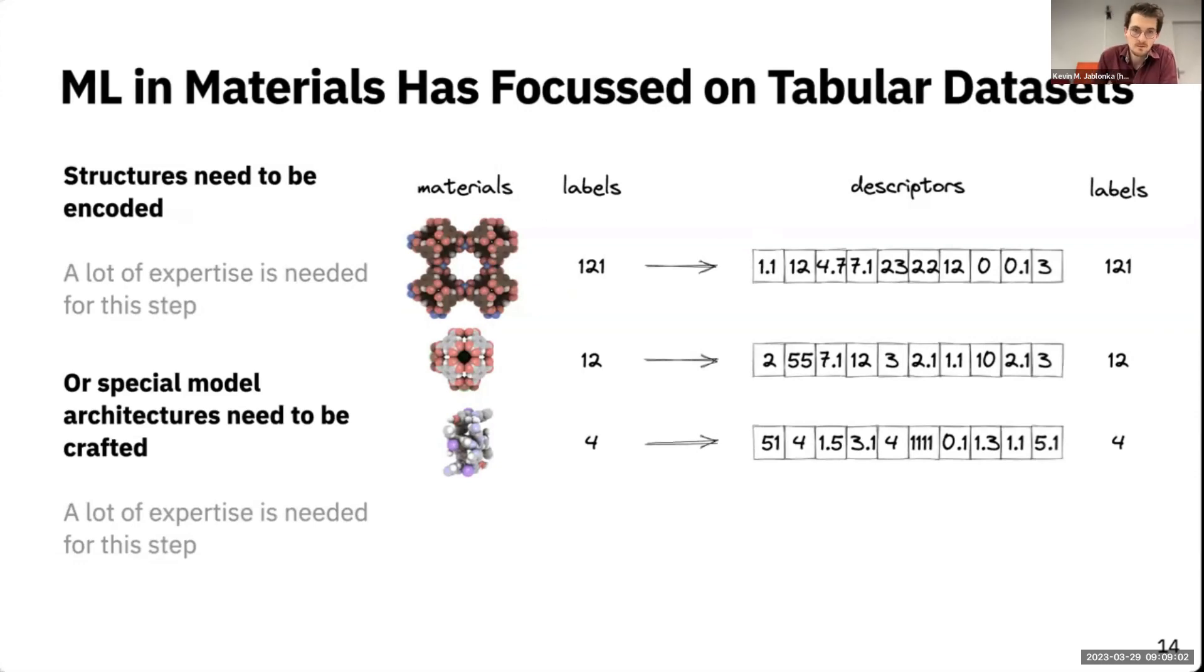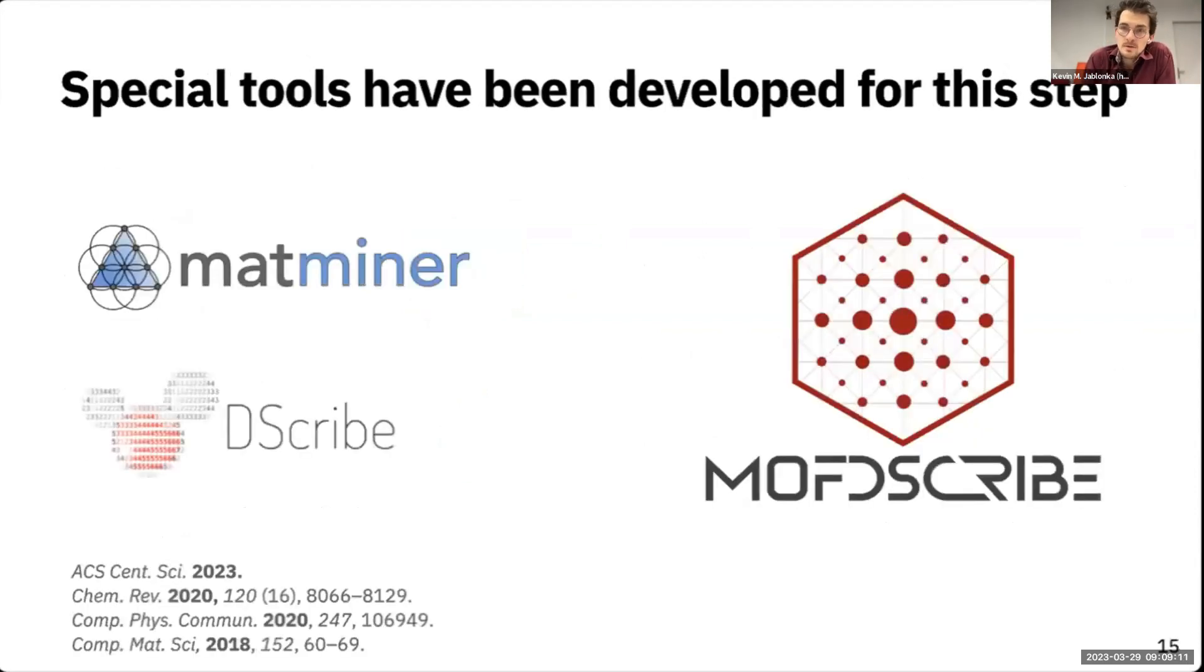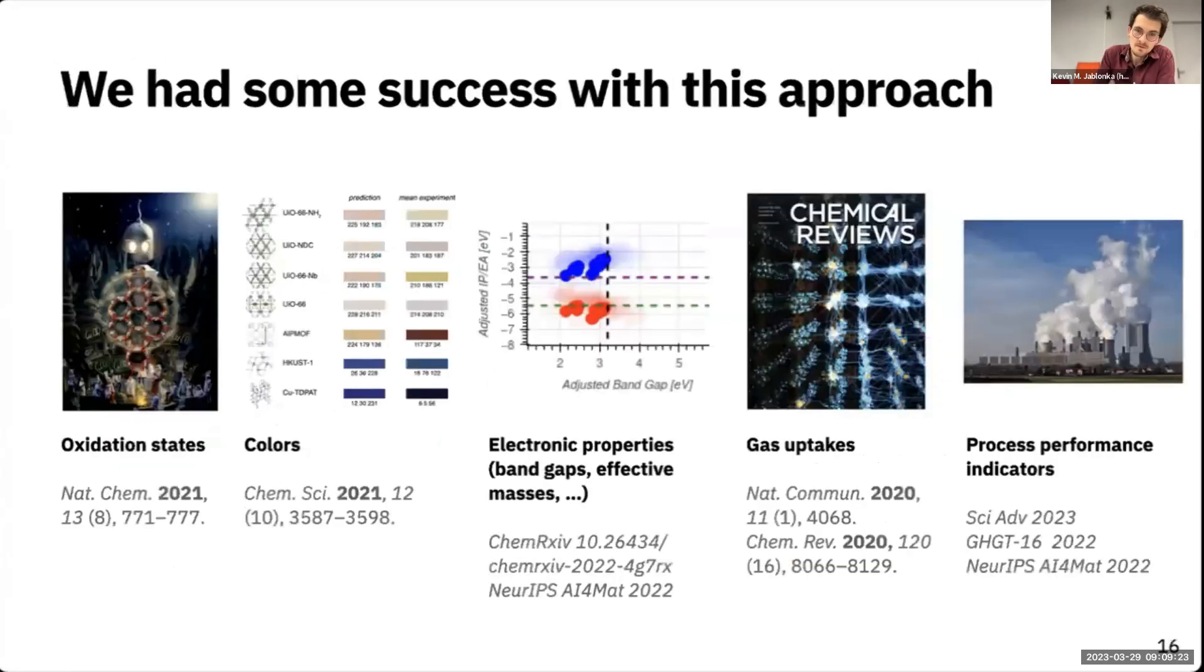Once you have this featurization approach, you can get new materials, put them into a model, and get predictions. There has been some tooling out there that helps us in this process, but it's still quite labor intensive and needs a lot of trial and error to find good features for a given task at hand. This has helped us across scales - I could use this approach from the atom scale up to the plant scale.